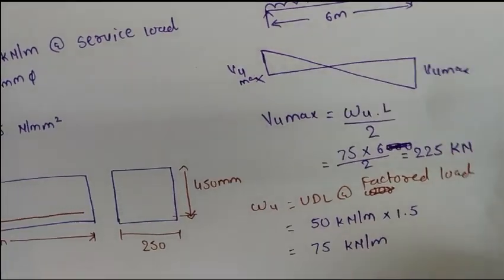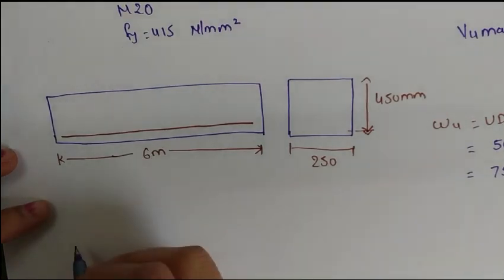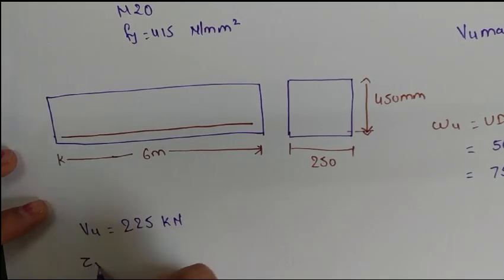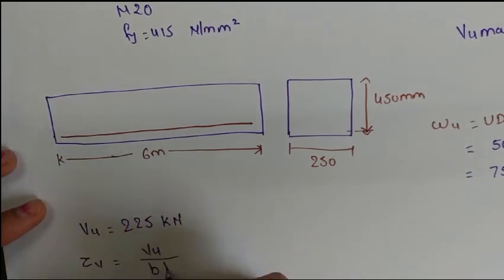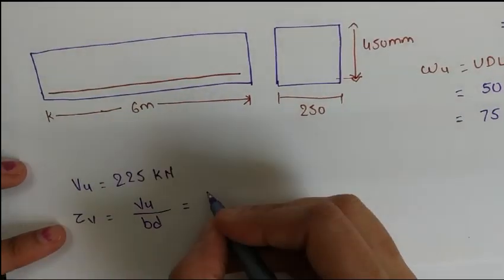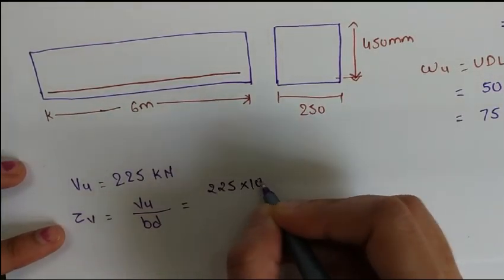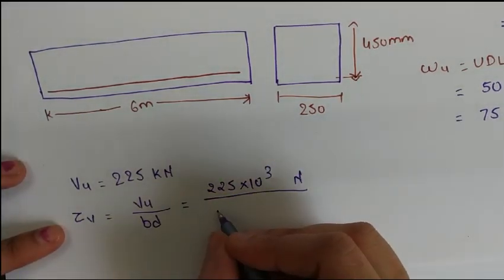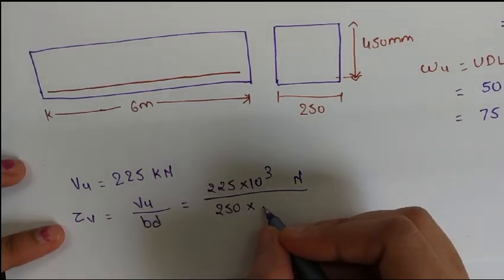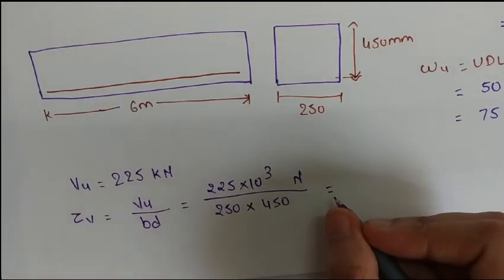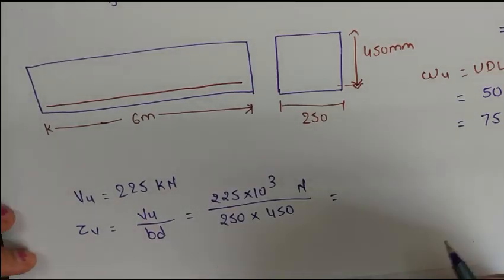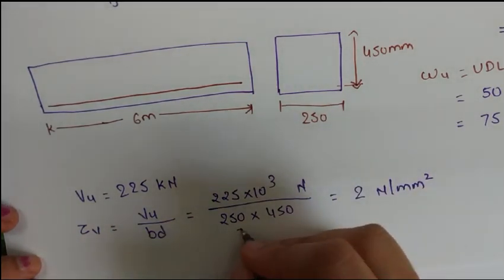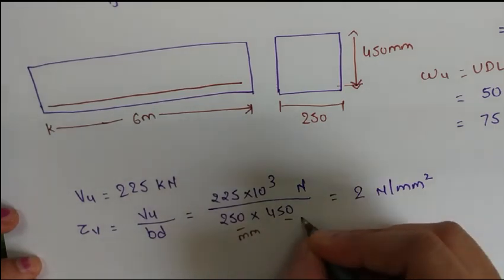Now after calculating VU = 225 kN, we determine τv. The formula is τv = VU / (B × D) = 225 × 10³ N / (250 × 450 mm²) = 2 N/mm². Both B and D are taken in millimeters.